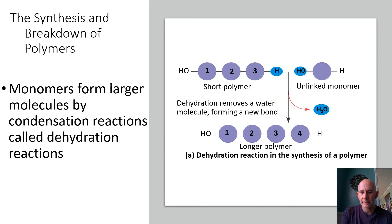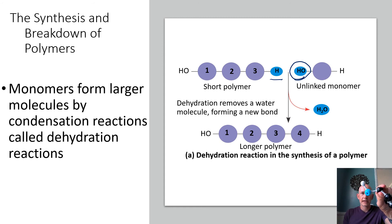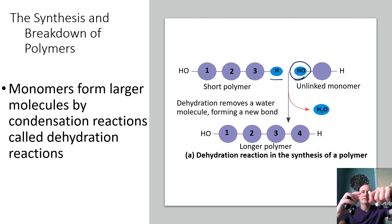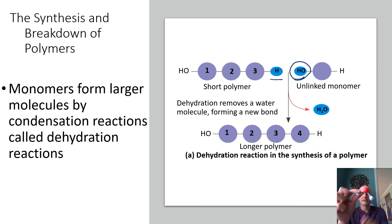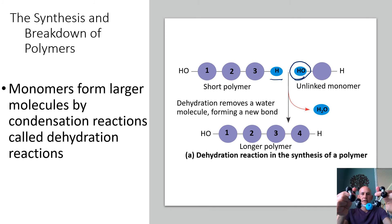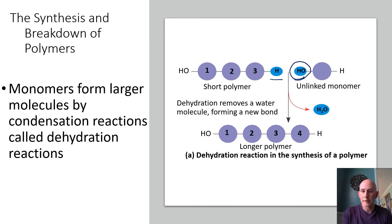It doesn't have to be two hydroxyls — it can be a hydroxyl and a hydrogen. The hydroxyl gets removed, the hydrogen gets removed, they make water — that's dehydration — and the two monomers combine in synthesis. If it's two hydroxyls, there will be an oxygen between them instead of whatever was attached to that hydrogen.